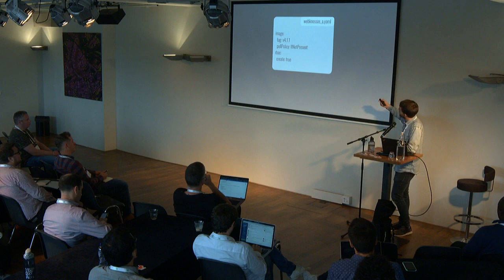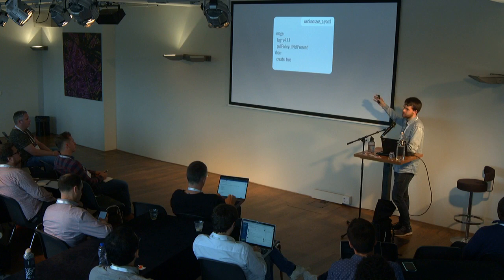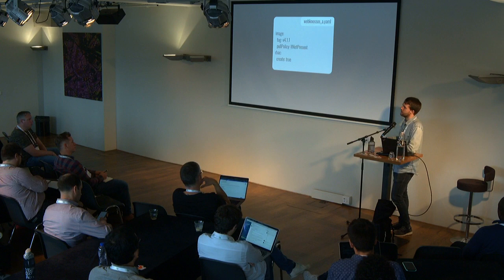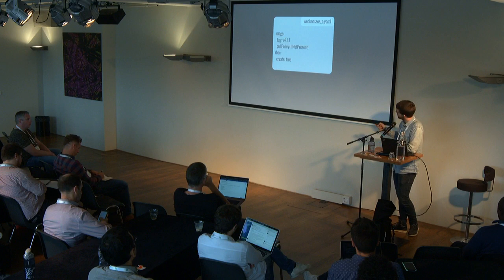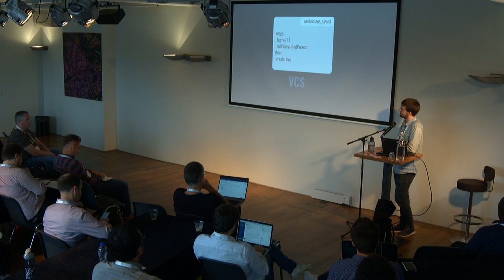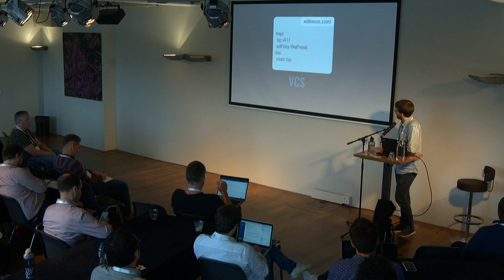For the first step, we create override YAMLs where we have the values we'd normally set with `--set` and just put them in a file. For our WebNosis-A release, we just specify the tag we want and some other values. At the moment we put this into a version control system, we get a lot of benefits — and at that moment we can also call it GitOps, if we use GitHub of course.